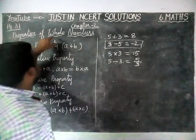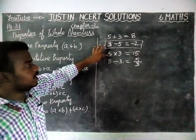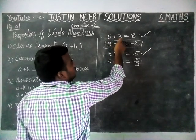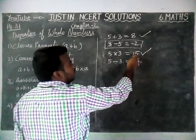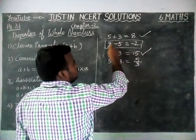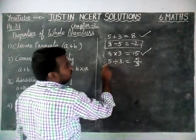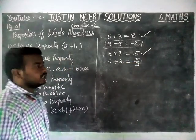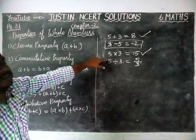So whole numbers are closed under addition and multiplication. In addition, both numbers are whole numbers and the answer is also a whole number. In multiplication, 5 and 3 are whole numbers and the answer is also a whole number. But in subtraction, the answer is not a whole number. The same applies to division — 5 by 3 is not a whole number. Therefore, whole numbers are closed under addition and multiplication.